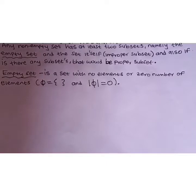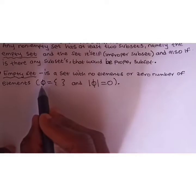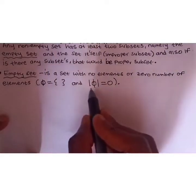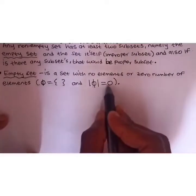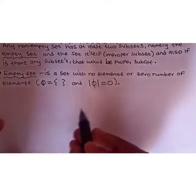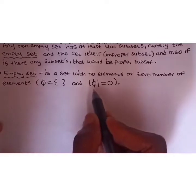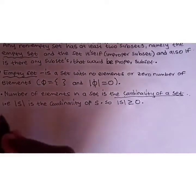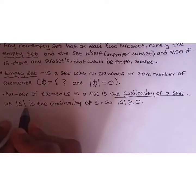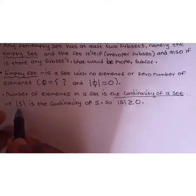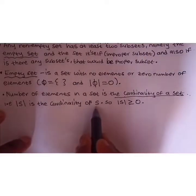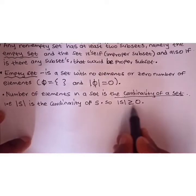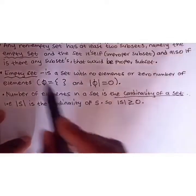The empty set is a set with no elements, or zero number of elements, denoted by the empty set symbol. The number of elements in a set is zero since it's empty. This is also known as the cardinality of a set — we define it by the number of elements in a set. So the absolute value of S denotes the number of elements in set S, which is the cardinality of S, and is greater than or equal to zero. If the cardinality of S equals zero, then S is actually an empty set.